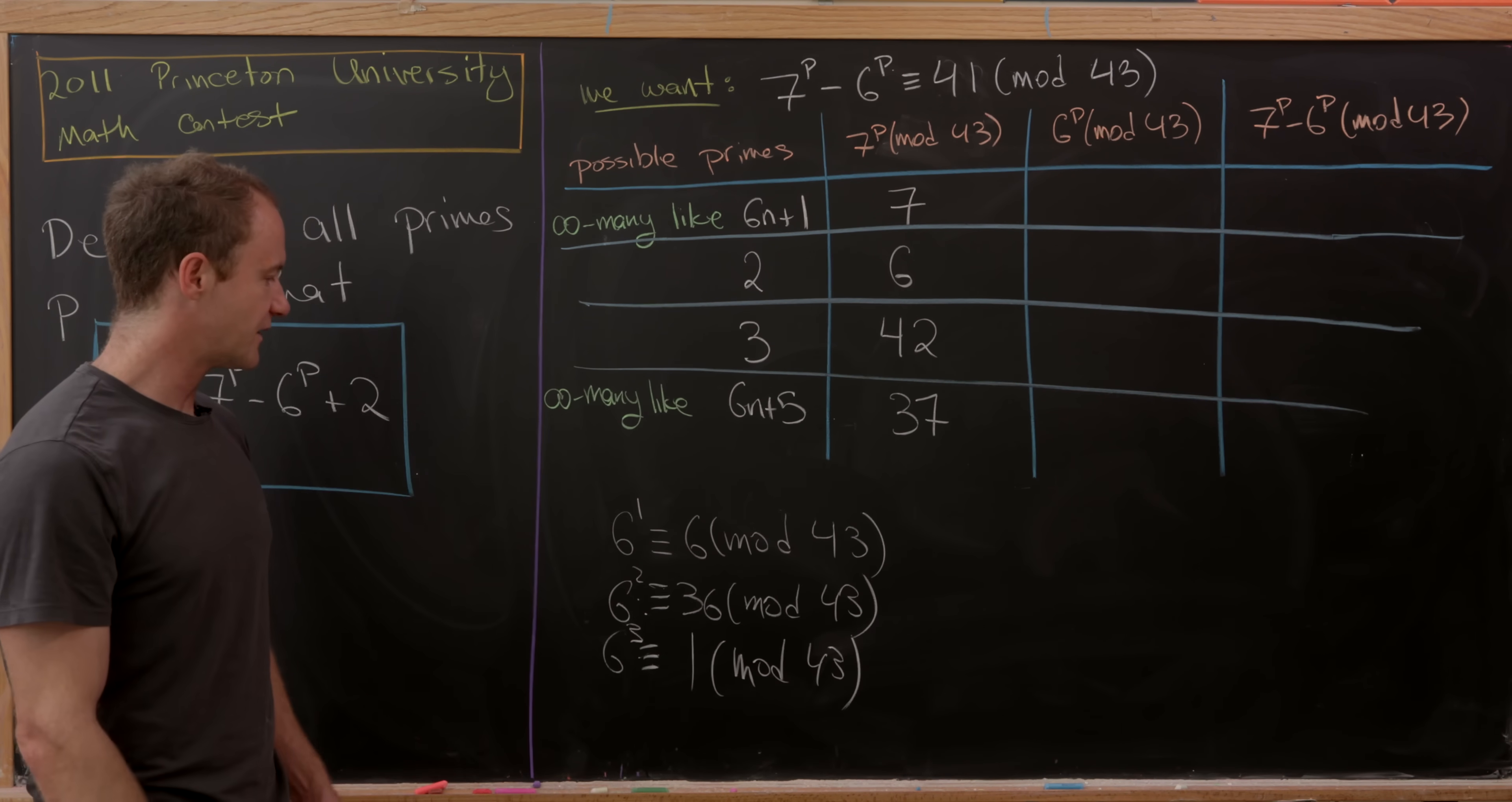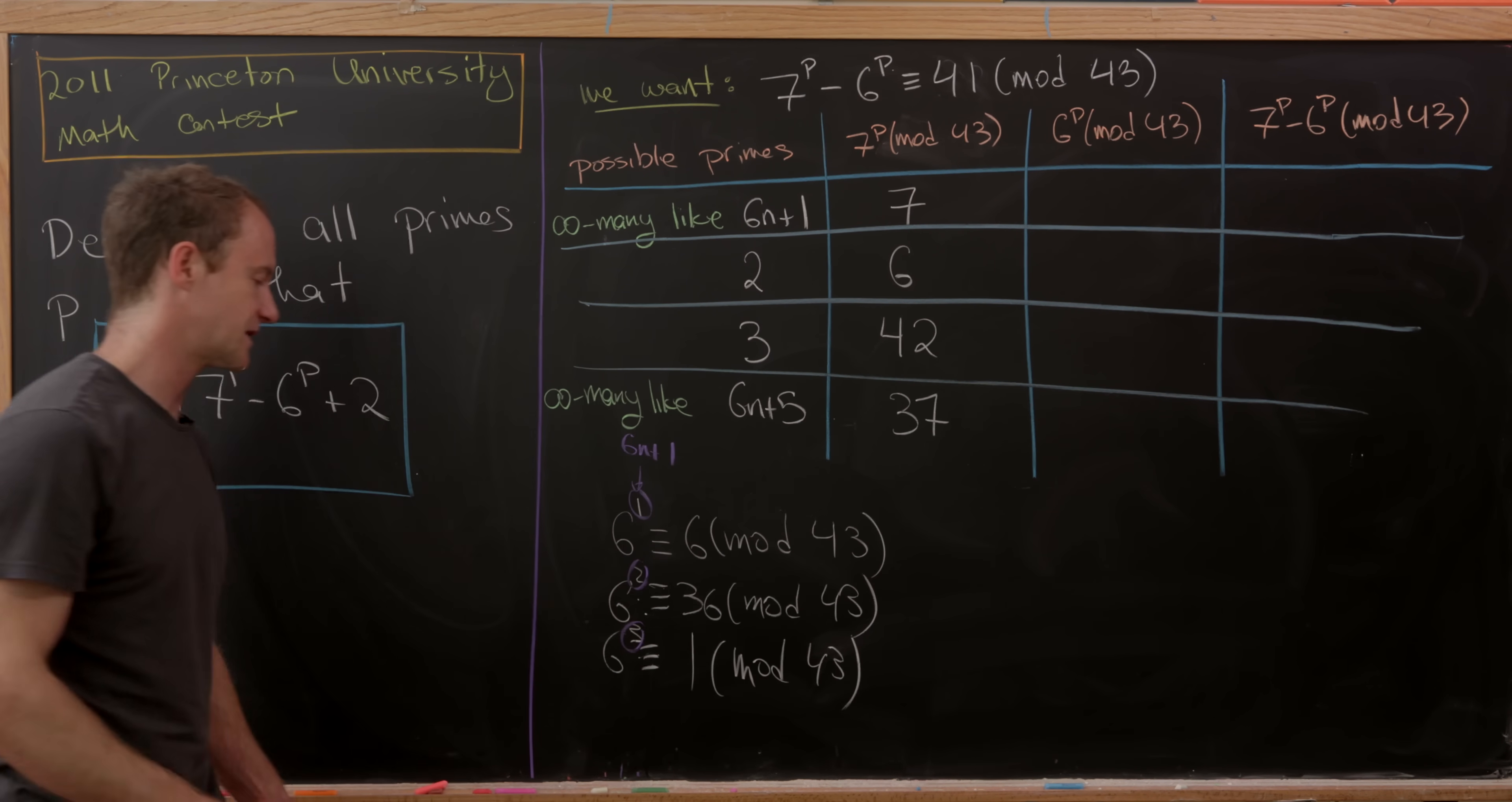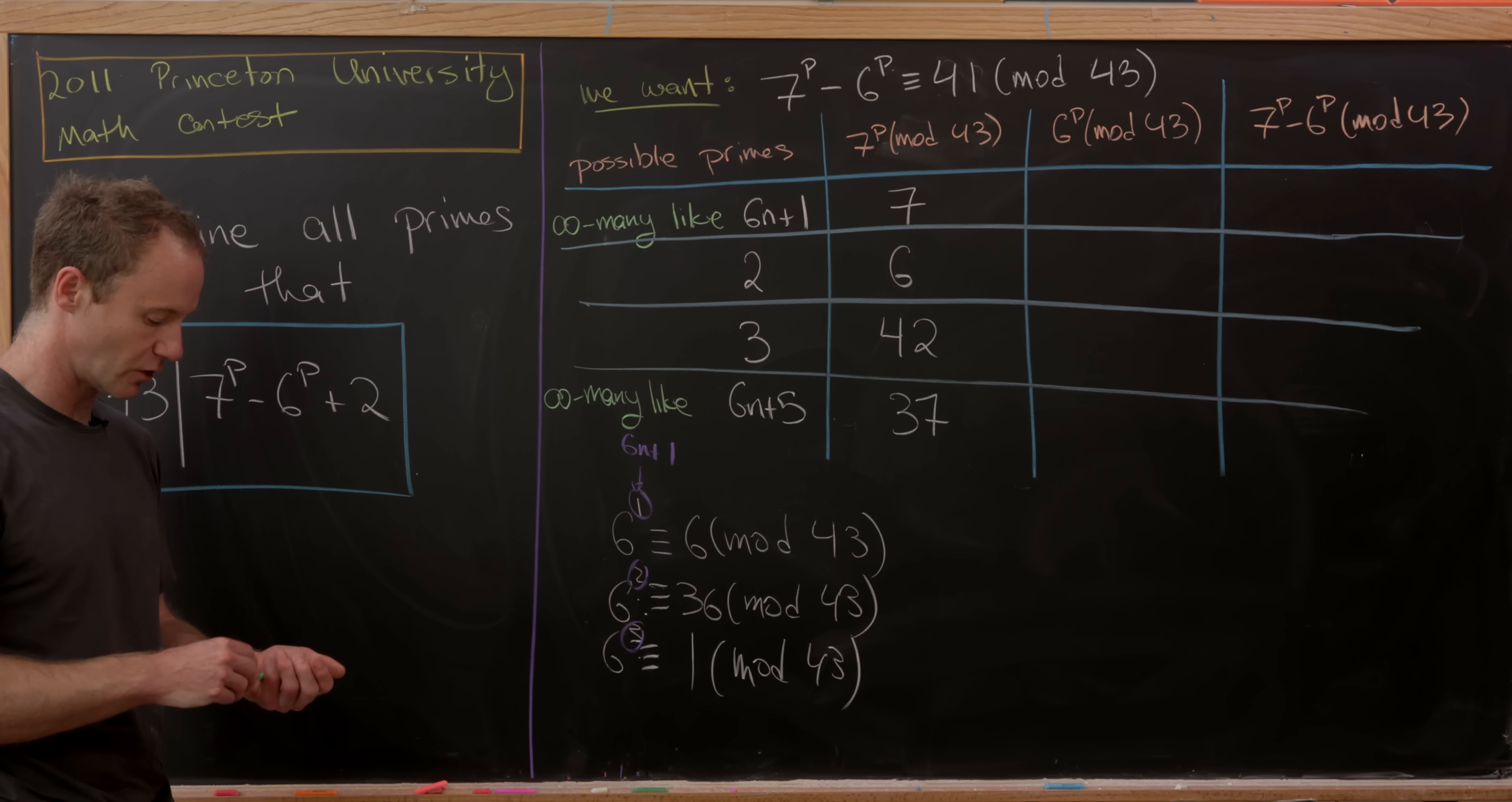Now we can fill this in. Not only is this true for 1, but this will be true for everything of the form 6n+1. And this is true for everything of the form 6n+2 and 6n+3. Then we'll loop back around. This is also 6n+4 because here the order is 3.